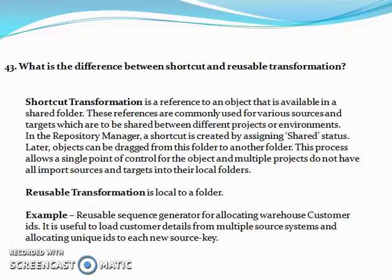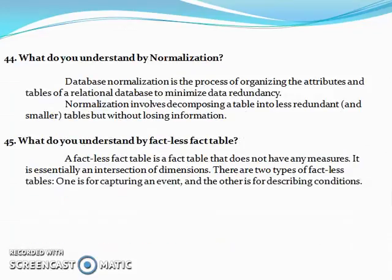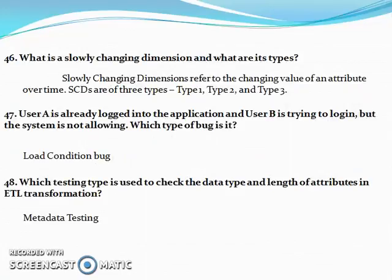What is the difference between shortcut and reusable transformation? What do you understand by normalization? What do you understand by a fact plus fact table? What is slowly changing dimension and what are its types?